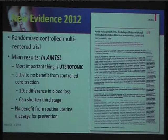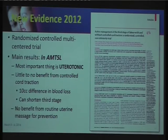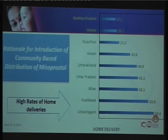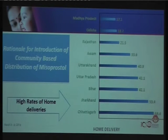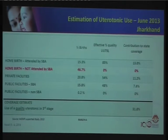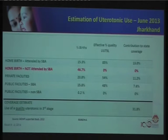Based on new evidence, the most important thing for PPH prevention is giving a uterotonic; controlled cord traction and uterine massage are no longer considered essential. The program has moved to community-based distribution of misoprostol, mainly because of high rates of home deliveries in states like Chhattisgarh, Jharkhand, Bihar, and Uttar Pradesh. In Jharkhand, home births not attended by skilled birth attendants were nearly half of all births, meaning no uterotonic was being given in those deliveries.